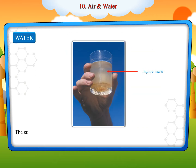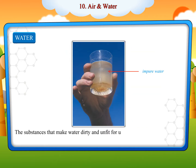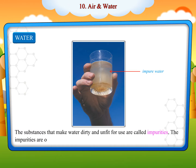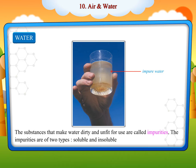The substances that make water dirty and unfit for use are called impurities. The impurities are of two types, soluble and insoluble impurities.